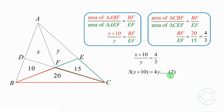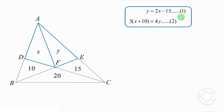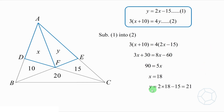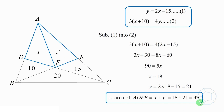We have done all the geometry. Let's move on to the algebra. We now have simultaneous equations in X and Y. Substituting equation 1 into equation 2 gives a simple linear equation. Solving that, we have X is equal to 18. Putting this value back into equation 1, then Y is equal to 21. Therefore, the area of ADFE is the sum of X and Y, which is equal to 39. Pretty much easy, isn't it?